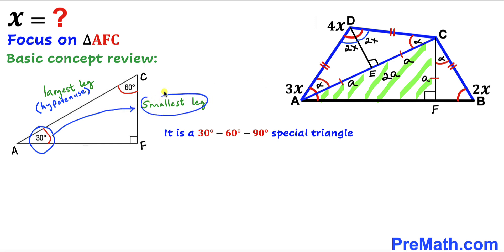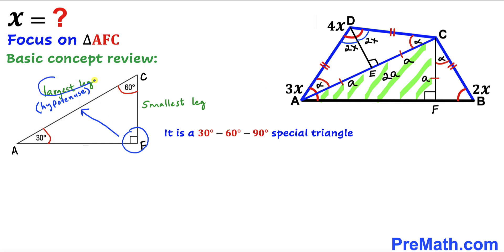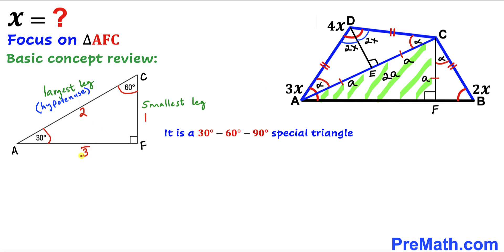In a 30-60-90 triangle, the 90-degree angle is opposite the largest side — the hypotenuse. The largest side is twice the smallest leg. So if the smallest leg is 1, the hypotenuse is 2 and the third leg is √3. In general, if the smallest leg is a, the hypotenuse is 2a and the third leg is a√3.